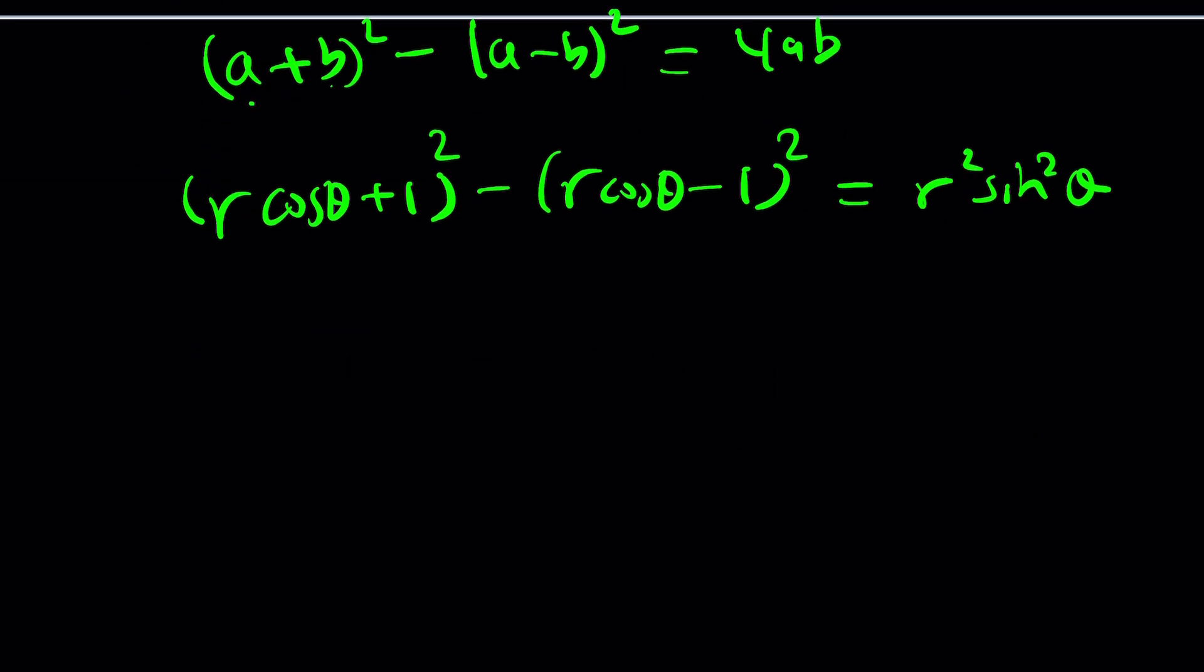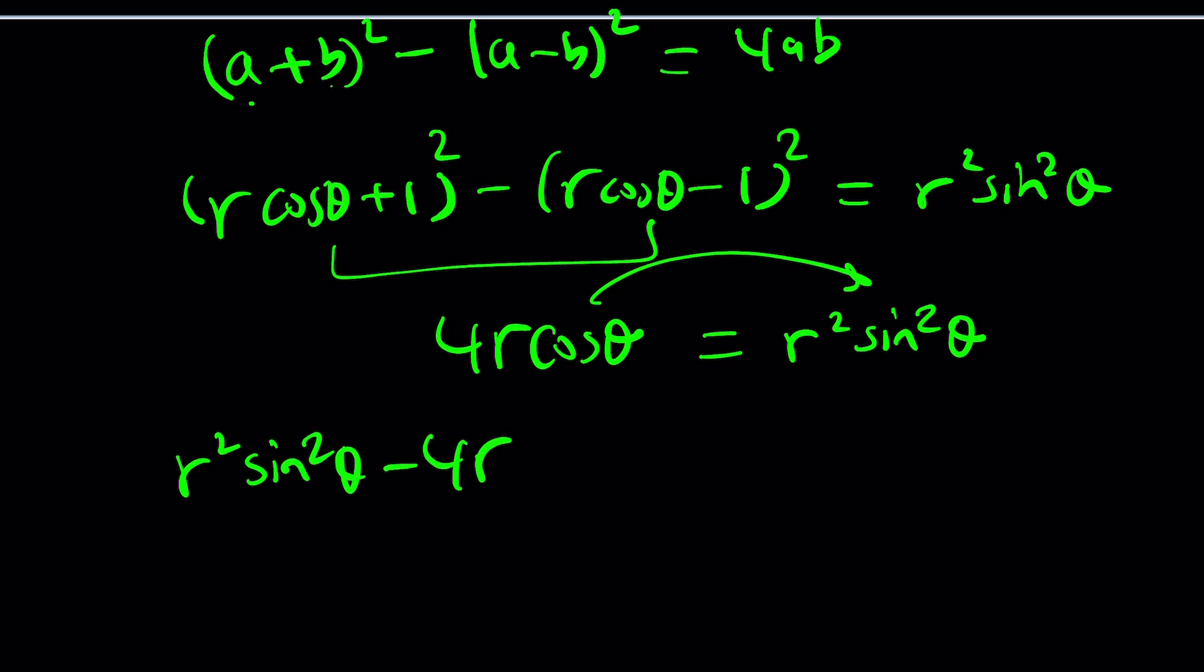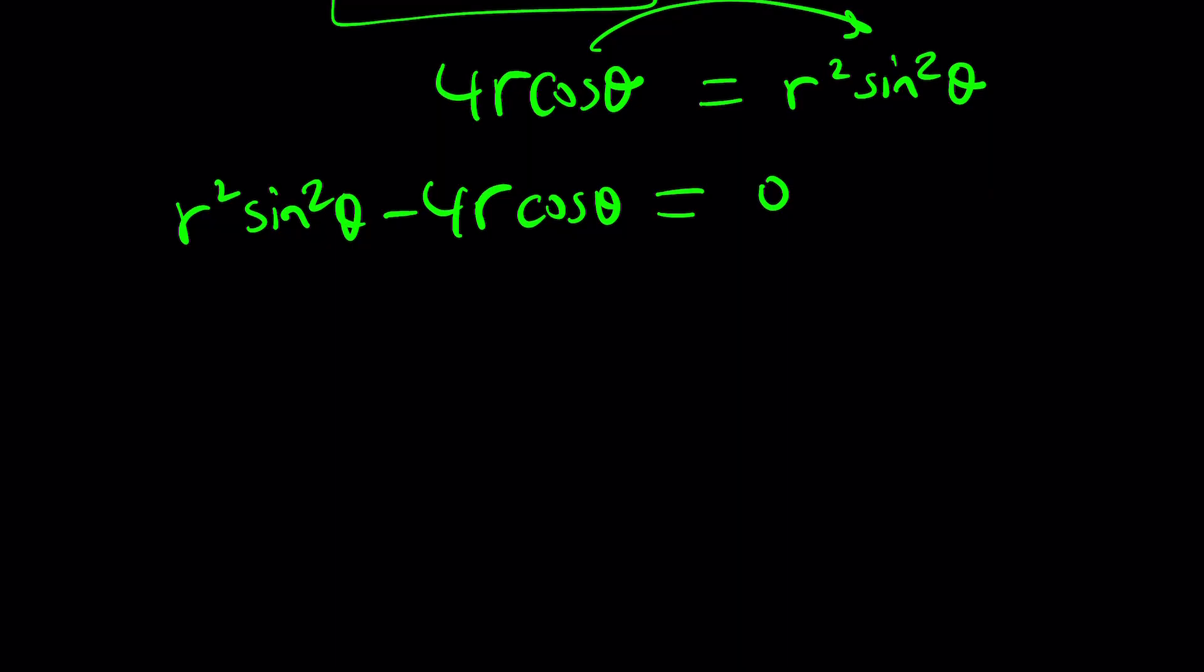Actually, I could do something about it. I don't know if you want me to use that identity, but I'll just use that because that kind of makes things a little easier. I'm going to subtract this from here, and I'm going to use an identity that I use very often. It's very helpful. If you subtract a minus b squared from a plus b squared, you get 4ab. Why? Squares cancel, 2ab plus 2ab gives you 4ab. So I'm going to do the same thing here. r cosine theta plus 1 squared minus r cosine theta minus 1 equals r squared sine squared theta. These two will give me 4r cosine theta, 4ab, equals r squared sine squared theta.